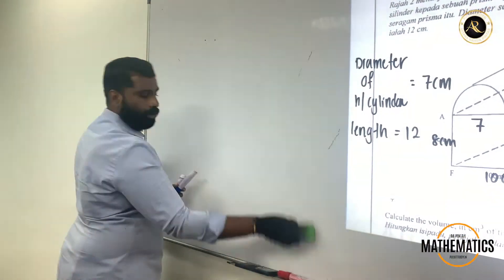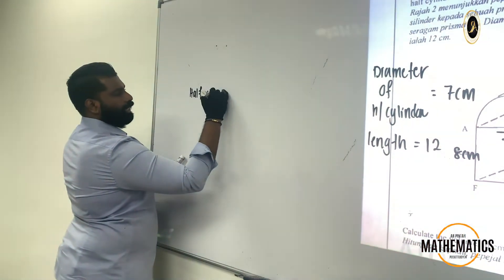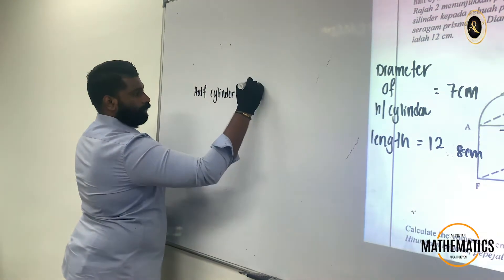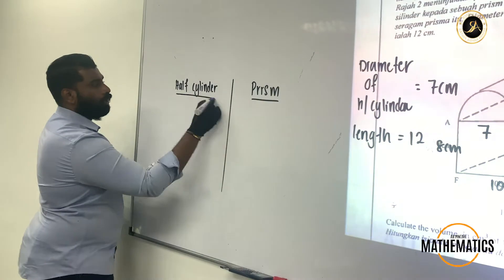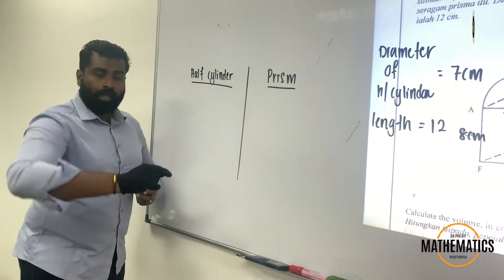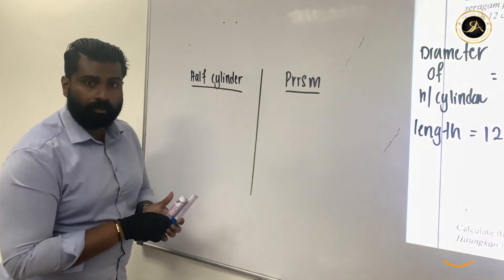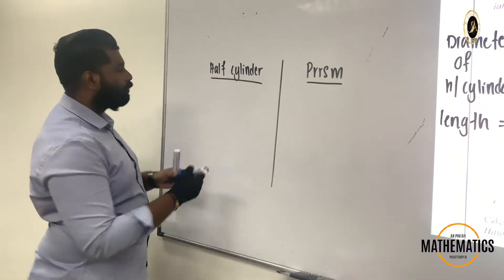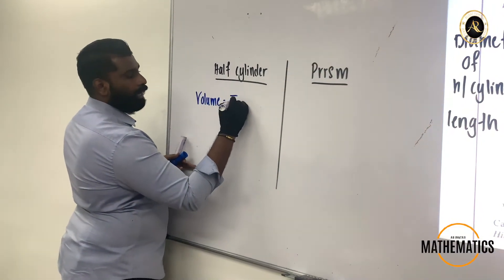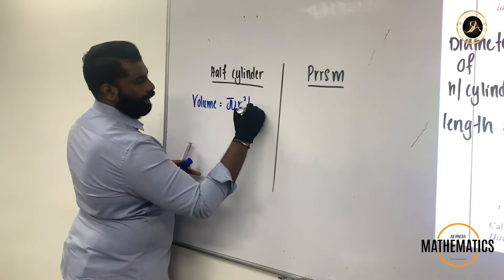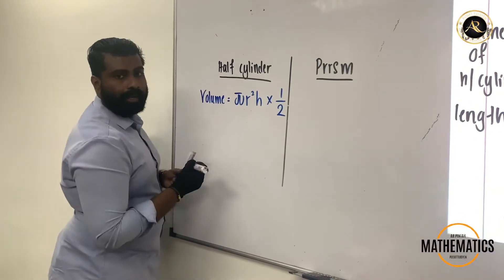First, we have half cylinder. Then another one more will be prism. What is the formula for a half cylinder? Whenever you see there is a half cylinder or hemisphere, there is about half. Automatically we are going to times by 1 over 2 or divided by 2.